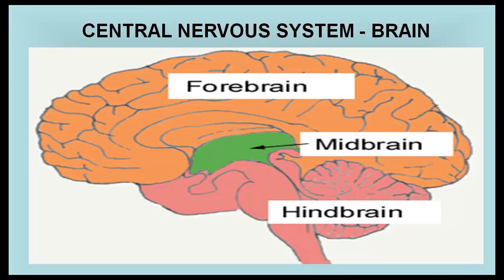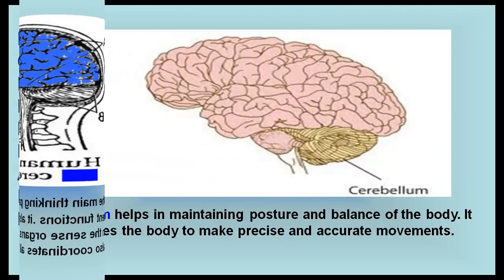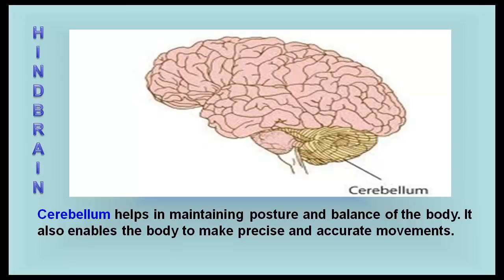The brain is part of the central nervous system and consists of a forebrain, midbrain, and hindbrain. The cerebrum, the largest part of the brain, is present in the forebrain. It is the main thinking part of the brain, has different areas for performing different functions, contains sensory areas that receive information from sense organs, and coordinates all voluntary actions of the body. The cerebellum of the hindbrain helps in maintaining posture and balance of the body and enables precise and accurate movements.